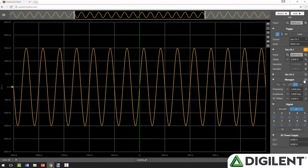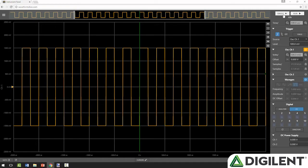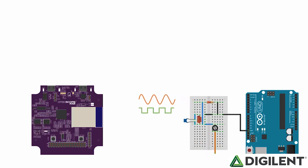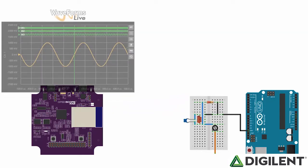What does this mean for you? Well, OpenScope MZ makes it easy to generate analog and digital signals to stimulate your circuit using the power supplies, function generator, and GPIO. You can also measure and visualize analog and digital signals using the oscilloscope and the logic analyzer.